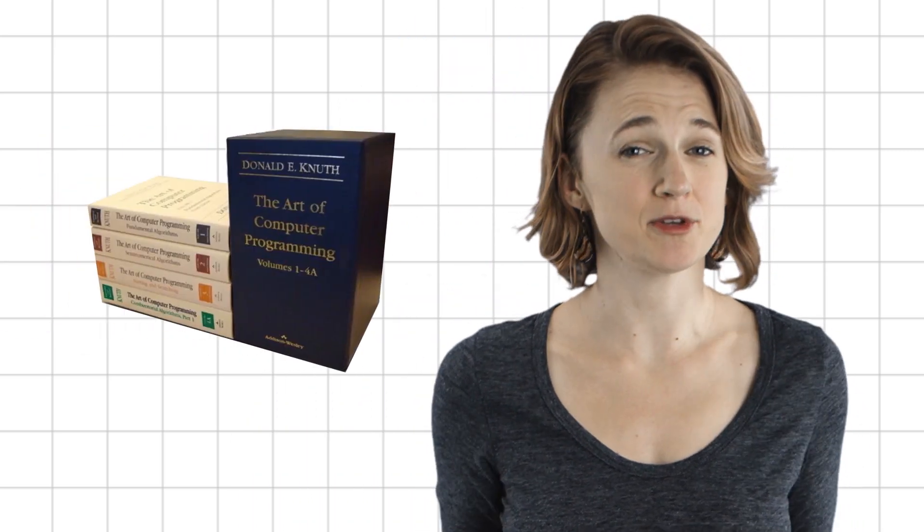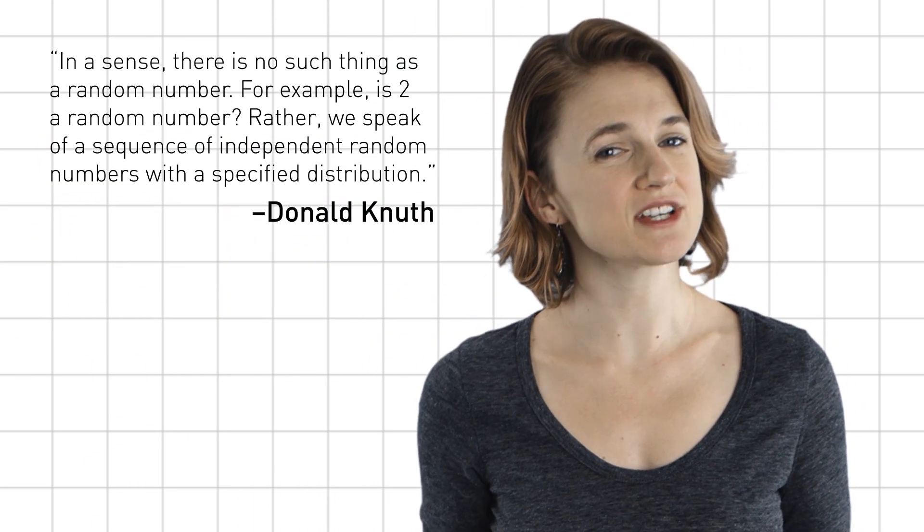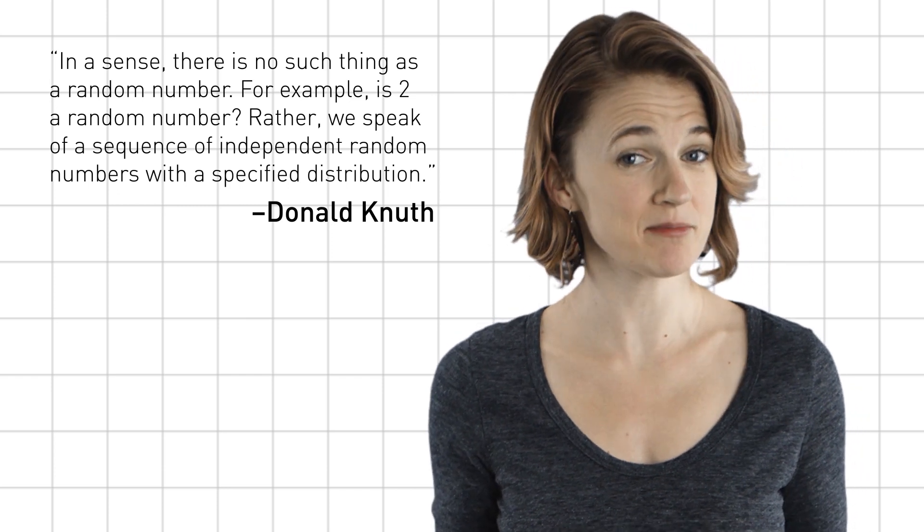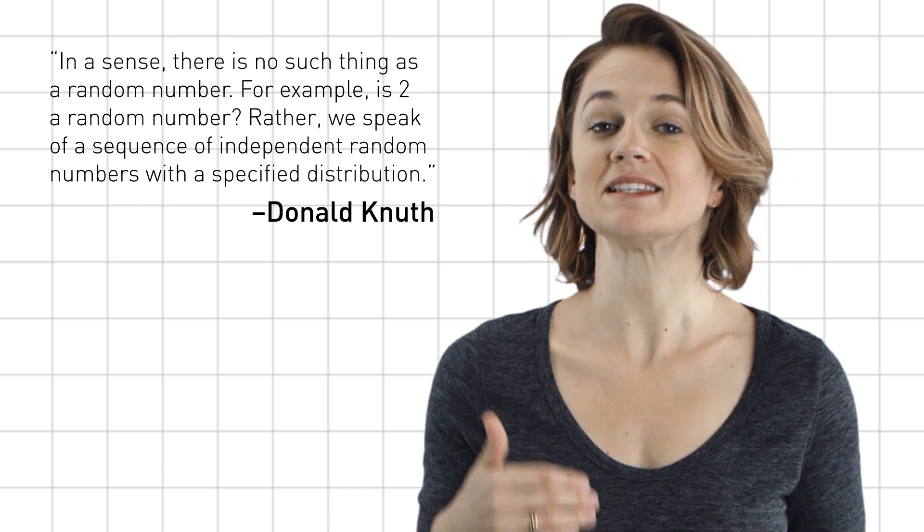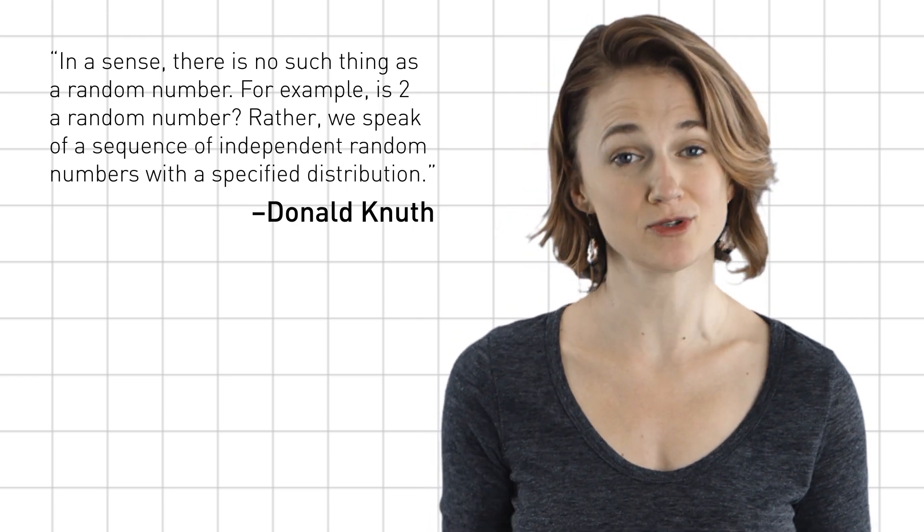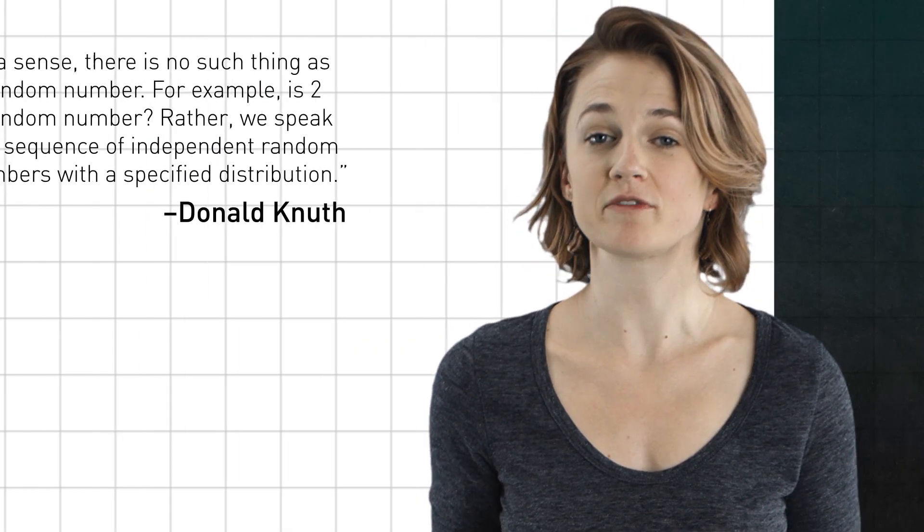As Donald Knuth put it in The Art of Computer Programming, in a sense, there is no such thing as a random number. For example, is two a random number? Rather, we speak of a sequence of independent random numbers with a specified distribution.